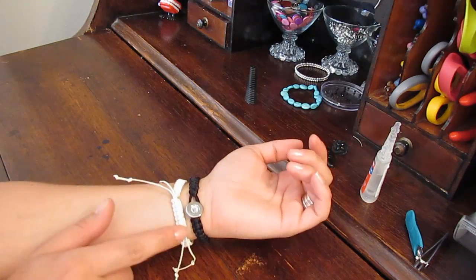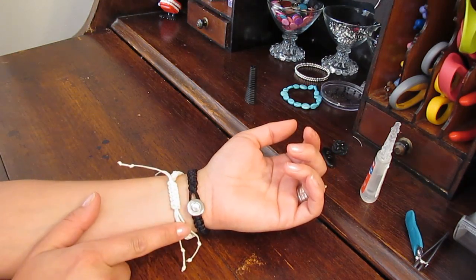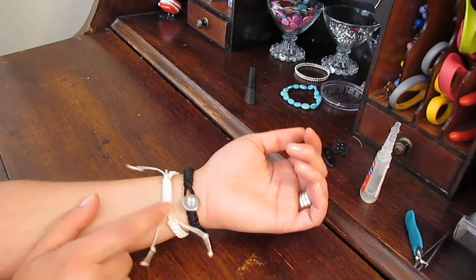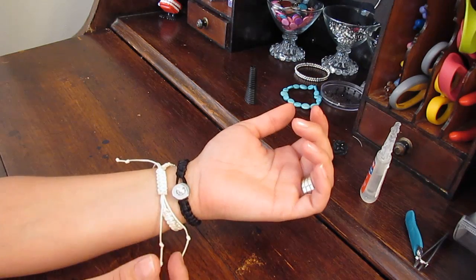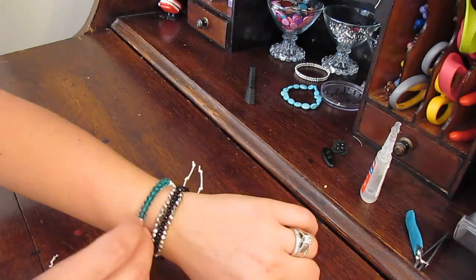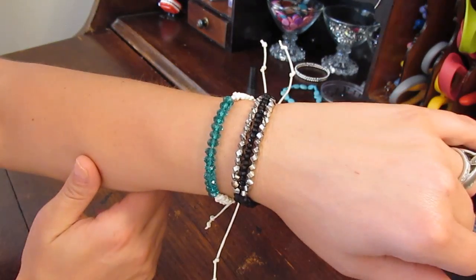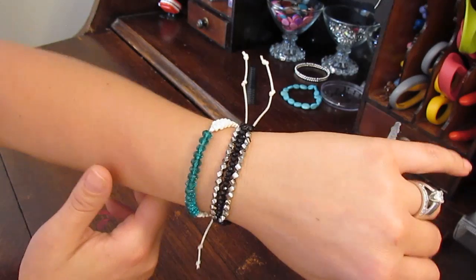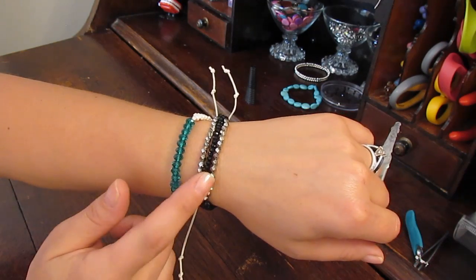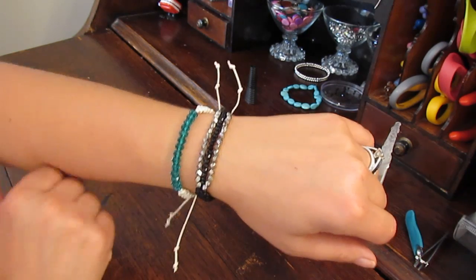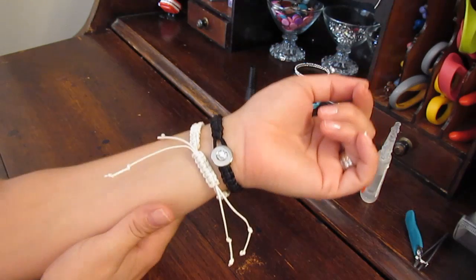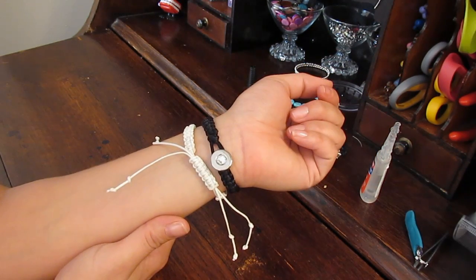The bracelet's finished. Here's the sliding knot closure style and here is the button style. Whichever way you like, it doesn't matter. One strand, three strands, gosh, you could go all out and even do more strands than that. So I hope I've inspired you to be able to use some of those smaller beads in a new way. And thanks for watching. Lacquer and Lace.